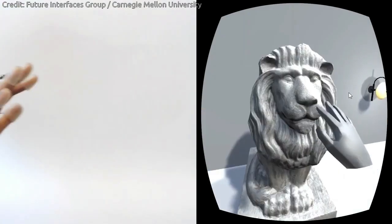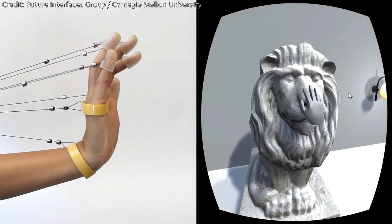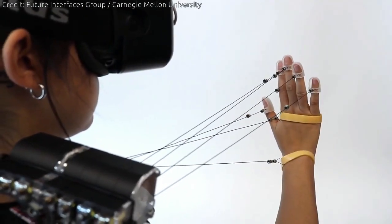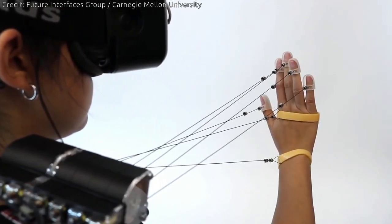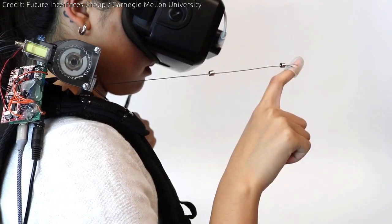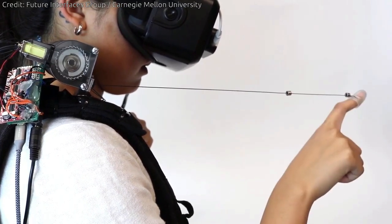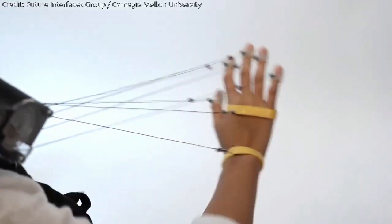Similarly, the string mechanism enables people to feel the contours of a virtual sculpture, sense resistance when they push on a piece of furniture, or even give a high-five to a virtual character. The shoulder-mounted device takes advantage of spring-loaded strings to reduce weight, consume less battery power, and keep costs low.